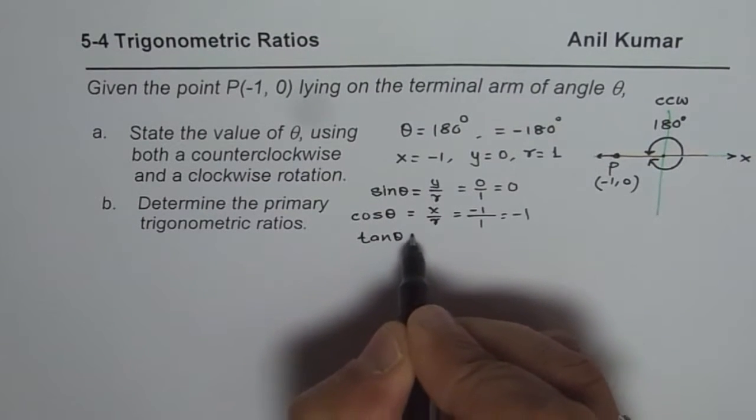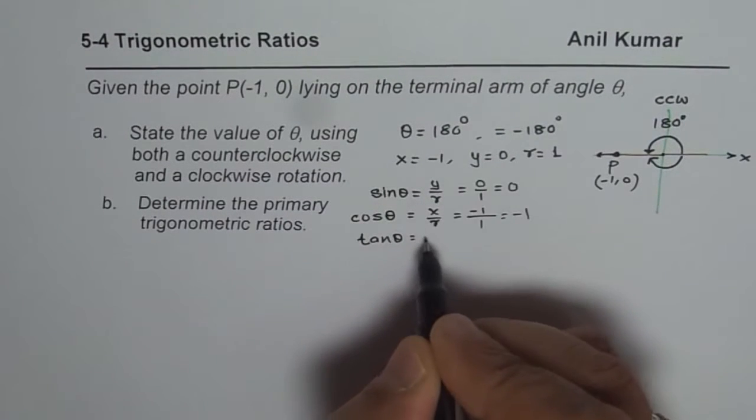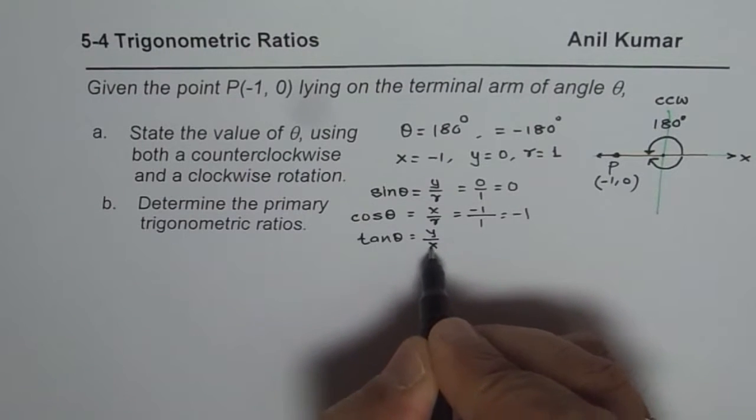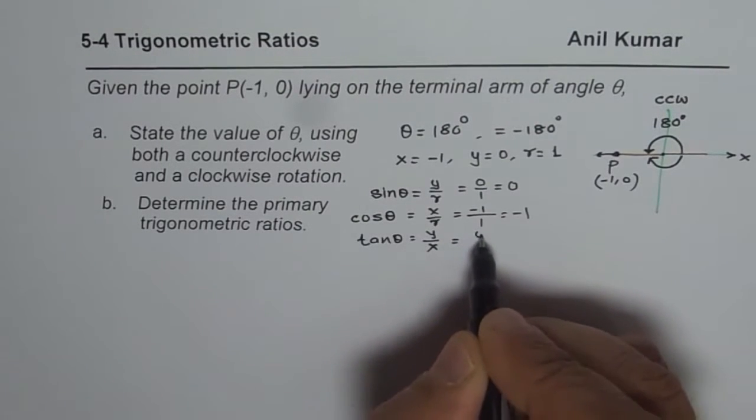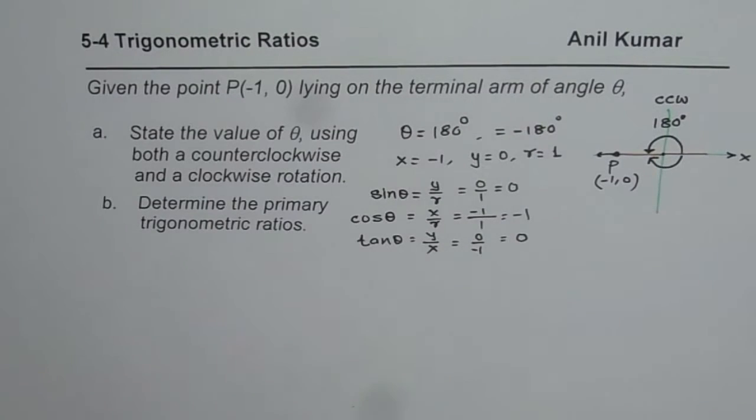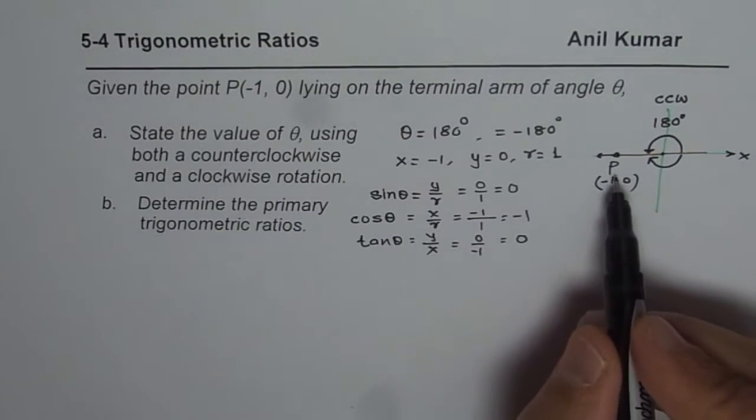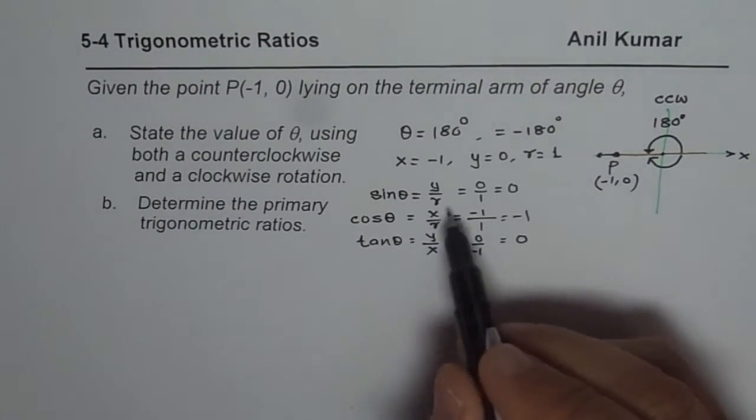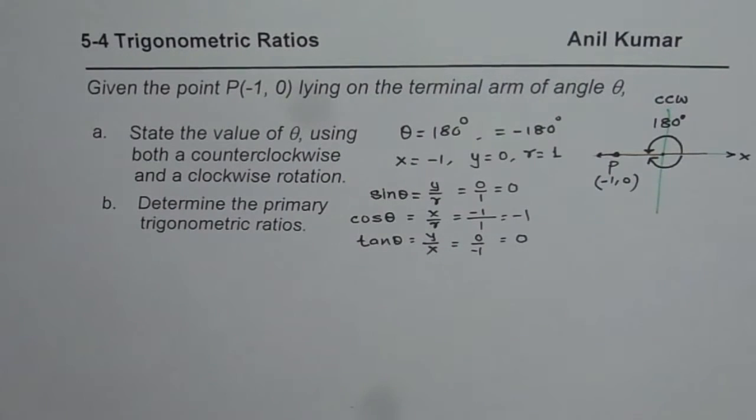Tan theta is always y over x. y is 0, x is -1, so you again get 0. So these are the values of primary trigonometric ratios. For any value of coordinate point P(x, y) in general, these are the ratios.